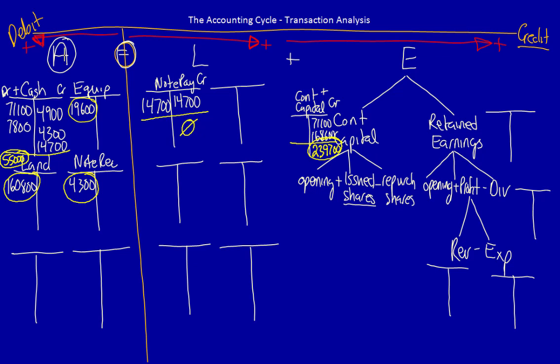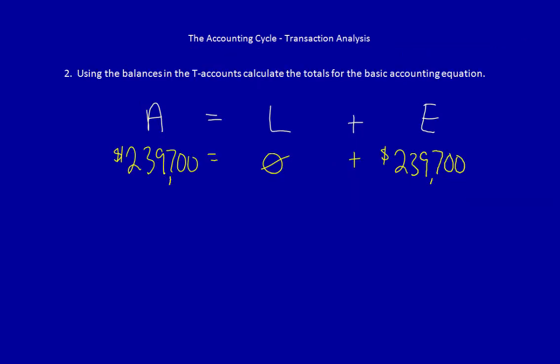we discover they equal $239,700. The total for liabilities are zero, and equity. We can see assets equal liabilities plus equity. This indicates that as long as our entries to the micro-T accounts are balancing, then the overall accounting equation will always balance also.